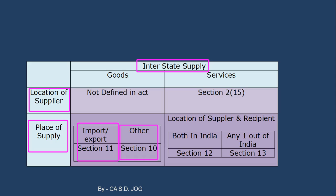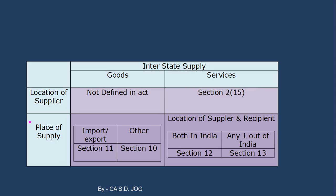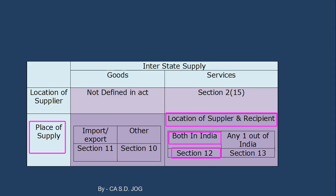Now, as we have discussed goods, let us move to services. For services under Section 12 — which we already discussed — we determine the location of supplier. In case of place of supply: if the location of supplier and location of recipient both are in India, it is a purely local transaction — refer Section 12. If any one of them is outside India, refer Section 13. So if location of supplier and recipient are both in India, what will be the place of supply of service?